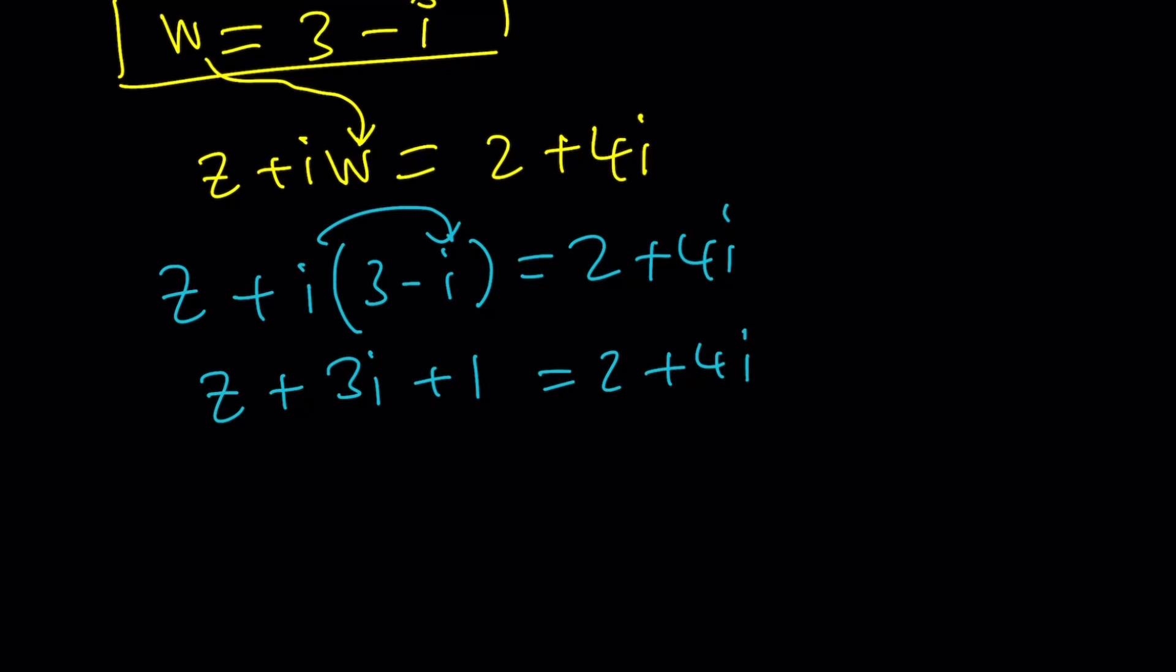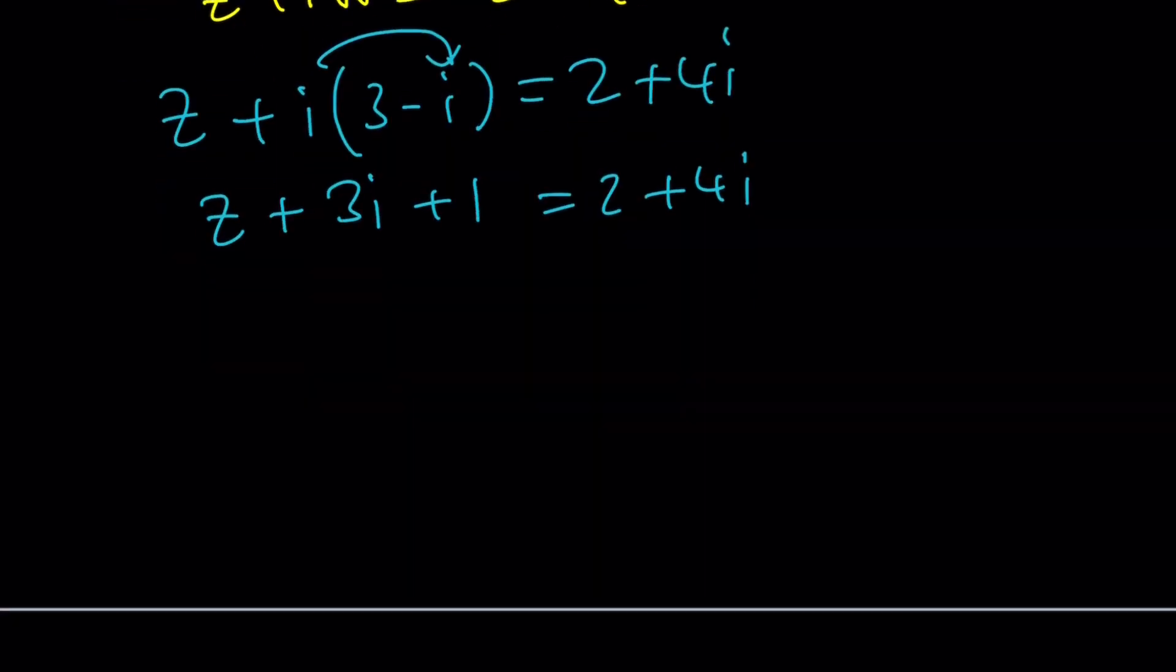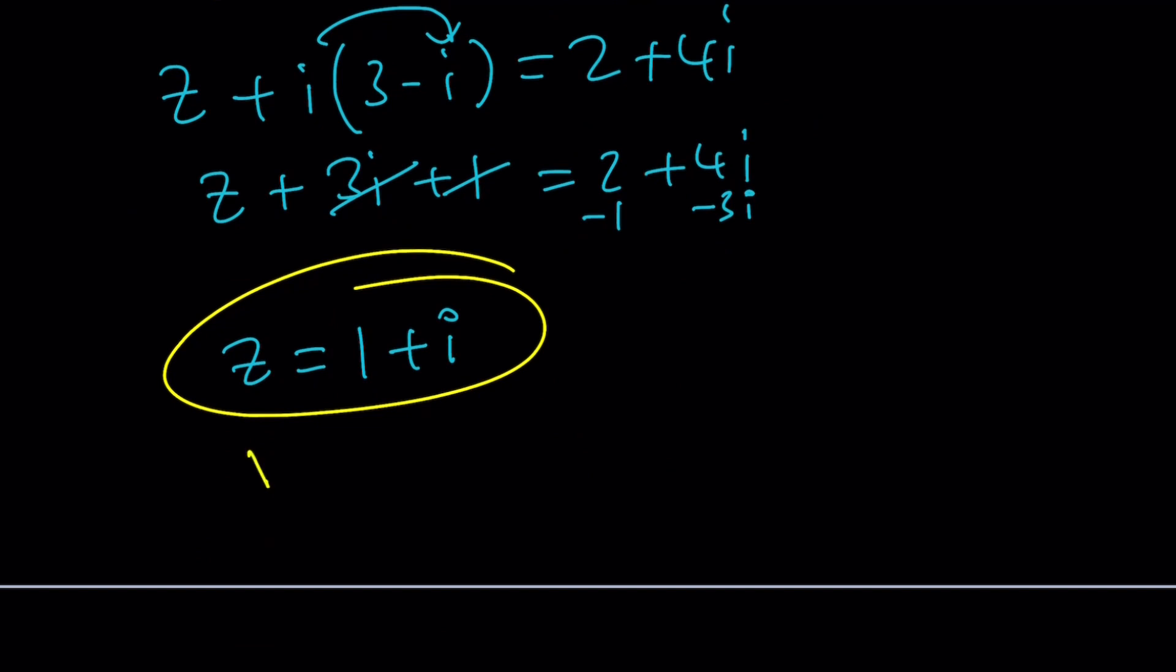So at this point, it's up to you. You can subtract 1 plus 3I from both sides. In other words, add negative 1 minus 3I, the opposite. And now you're going to get Z as 1 plus I. And that's pretty much the value of Z. And we already found W, which is 3 minus I. So that basically solves the system.